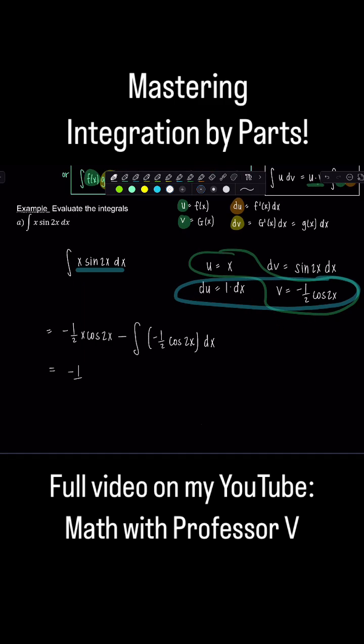I've got negative one half x cosine 2x. Take that one, negative one half outside. So now it's positive one half integral cosine 2x dx.